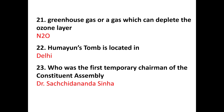The next question is: who was the first temporary chairman of the Constituent Assembly? The first temporary chairman was Dr. Sachidananda Sinha. The first permanent chairman was Rajendra Prasad, who was also our first President of India. H.C. Mukherjee was the Vice President of the Constituent Assembly. Please remember all these carefully — your marks are very important and you can get a good rank.